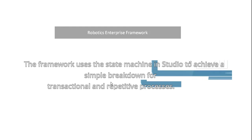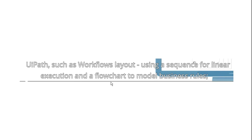What is REFramework in the architecture? The framework uses the State Machine in Studio to achieve a simple breakdown for transactional and repetitive processes. UiPath uses a workflow layout with a sequence for linear execution and a flowchart to model business rules. Linear or straightforward executions are handled in Sequence, while complex business rules use Flowchart.